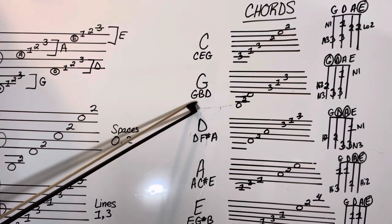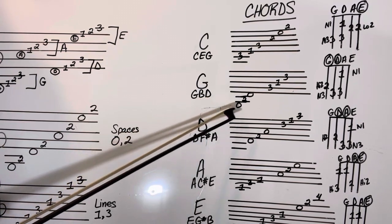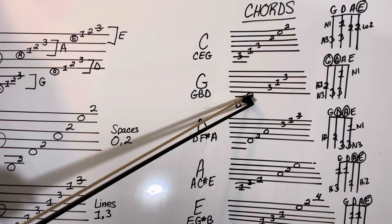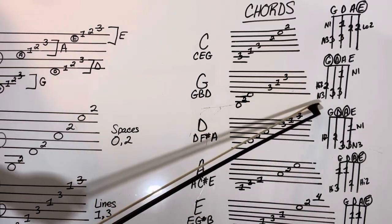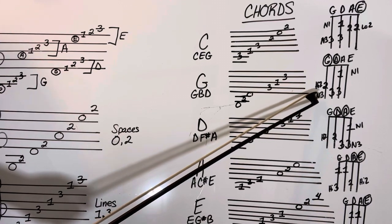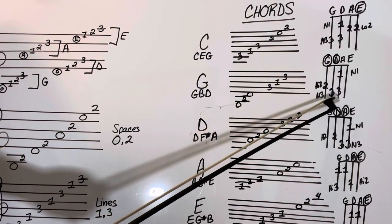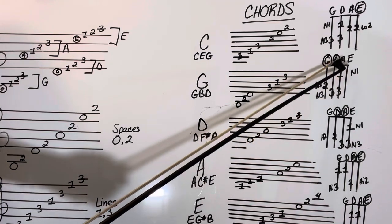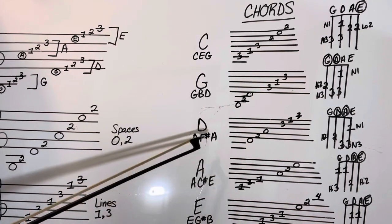The chord G is spelled G-B-D. So open 2-open or 3-1-3. Here's our little finger chart - we have open, high two, open, or three normal 3, one normal 1, and then three on D. So you have two different octaves there.